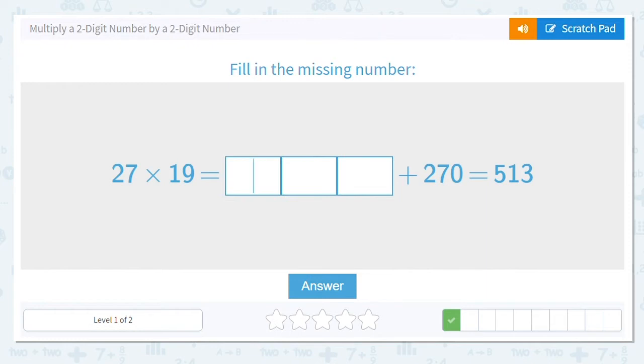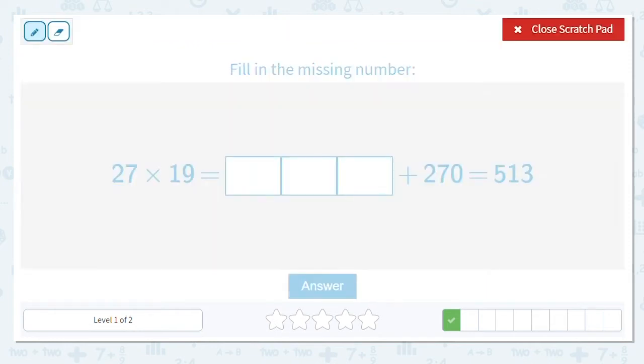Next one, we have 27 times 19. Thank goodness for my scratch pad. 27 times 19. We're missing my first partial product completely. So 7 times 9, because I'm in my ones place, is 63. Down the 3, I carry the 6. 9 times 2 is 18. 18 plus 6 more is 24.